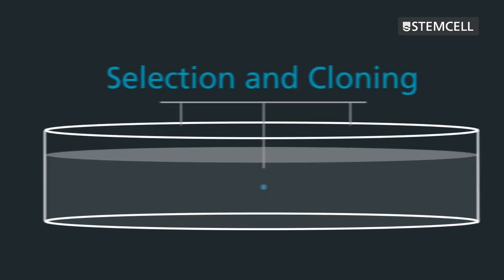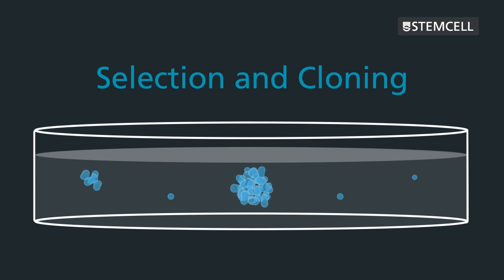By adding selection agents to the semi-solid medium, only those cells that are able to grow under the selective conditions form colonies, thus combining selection and cloning into a single step.